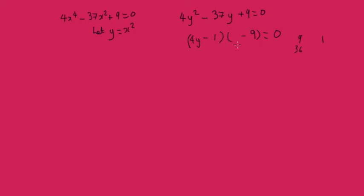Then we're going to have minus, that would be minus 36. And we're going to have minus 1y, which we'll add to the minus 36y to make minus 37. So we've now got 4y minus 1 equals 0. So y must be a quarter. Or y must be 9 from this.